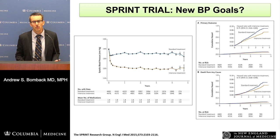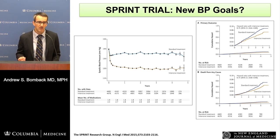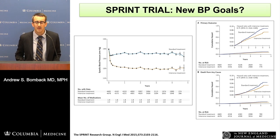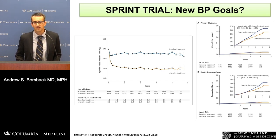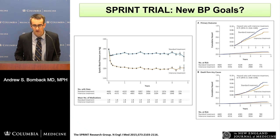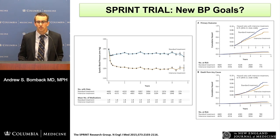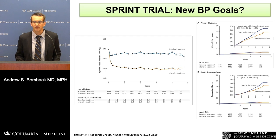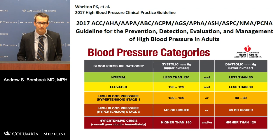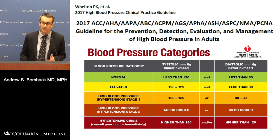Our goals for treating hypertension and who we label as hypertensive have been greatly influenced by the SPRINT trial — now amazingly seven years old — which really changed our definition of treatment goals. The SPRINT trial had two arms: one targeting a standard blood pressure goal of less than 140 systolic, and the other a more intensive goal of below 125 systolic. The group intensively treated to lower blood pressure goals achieved better primary outcomes — hard outcomes including cardiovascular events and death — prompting the need for new guidelines shortly after SPRINT was published.